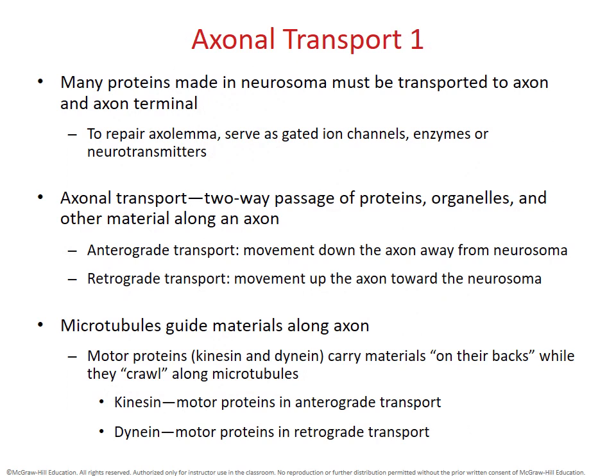In Objective 53, we start talking about the concept of axonal transport. Axonal transport is the passage of materials — be it proteins, organelles, really any materials — along the length of an axon. Axons can be extremely long, especially in motor neurons, and a single axon can be several feet long. So we need a special transport mechanism to allow materials to traffic between the axon terminal and the soma, which would be located in the spinal cord.